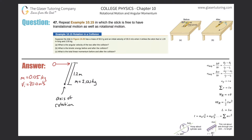Number 47. We're repeating example 10.15 again for the third time, in which the stick is free to have translational motion as well as rotational motion. This problem becomes a little more challenging. The stick is not fixed anymore with a nail — it's allowed to have both translational and rotational motion.